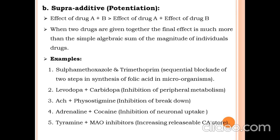An example of supra-additive effect: sulphamethoxazole and trimethoprim, used as an antibacterial drug. They act as sequential blockers in the steps of folic acid synthesis in microorganisms or bacteria. Sulphamethoxazole and trimethoprim sequentially block folic acid synthesis in bacteria, and finally the bacteria is killed.